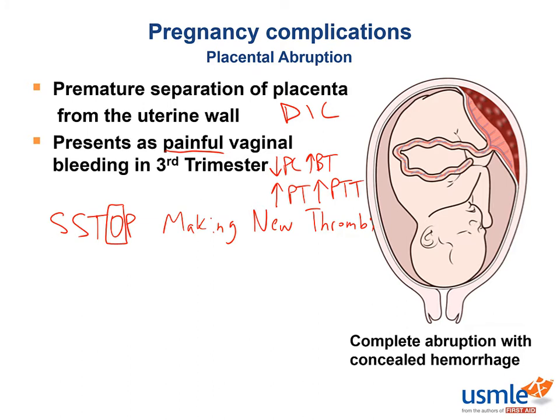The main mediator of DIC is called tissue factor, or TF. It is present in many tissues but is not a part of normal circulation. Tissue factor is released when there is vascular damage, which leads to activation of the clotting cascade. Some of the tissues which have a high concentration of tissue factor are lung, brain, and — you guessed it — placenta.